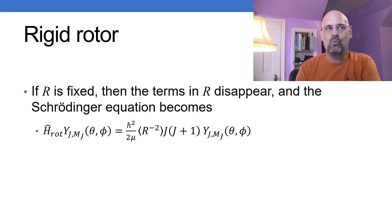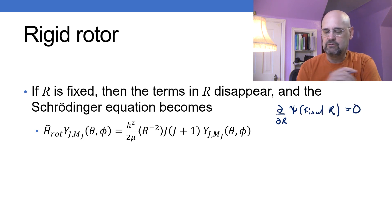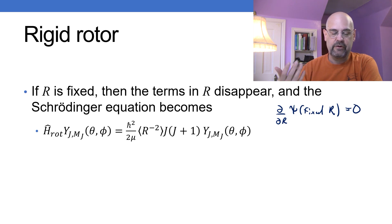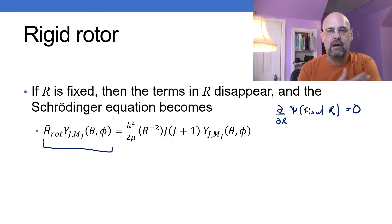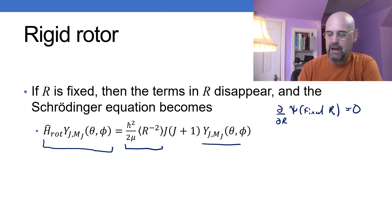If r is fixed, all of the terms in r disappear — any partial with respect to r on a function of fixed r is equal to zero. For a diatomic where r is just the distance between the two nuclei, this becomes much simpler. All the r-derivative terms drop out, and what we end up with is the rotational Hamiltonian acting on the spherical harmonics equal to minus h-bar squared times the expectation value of r⁻² times J(J+1), multiplied by the wave function. It is an eigenfunction equation.